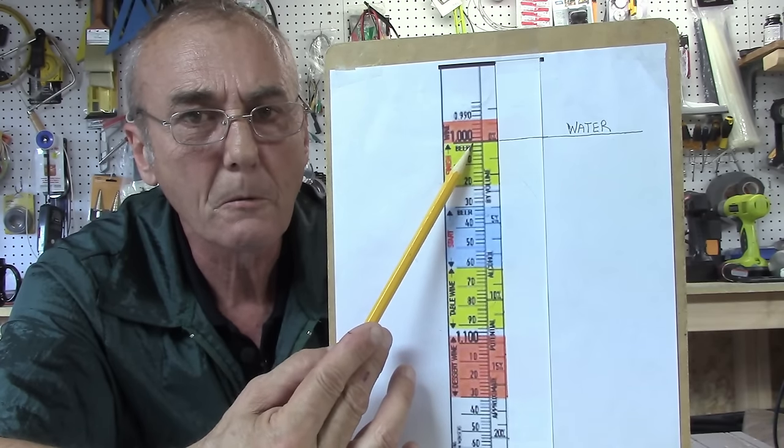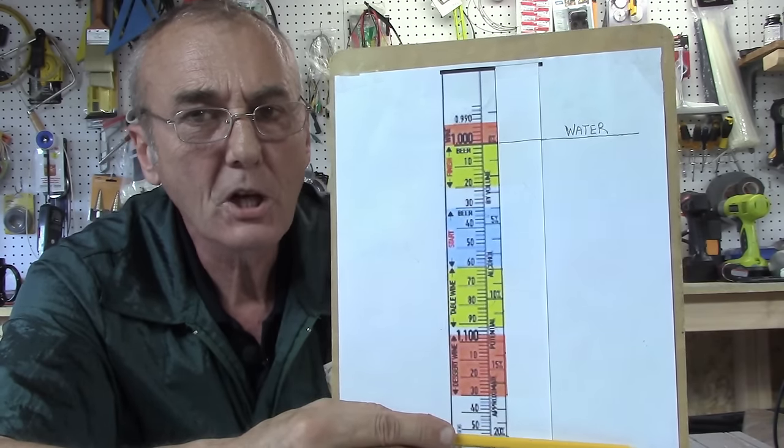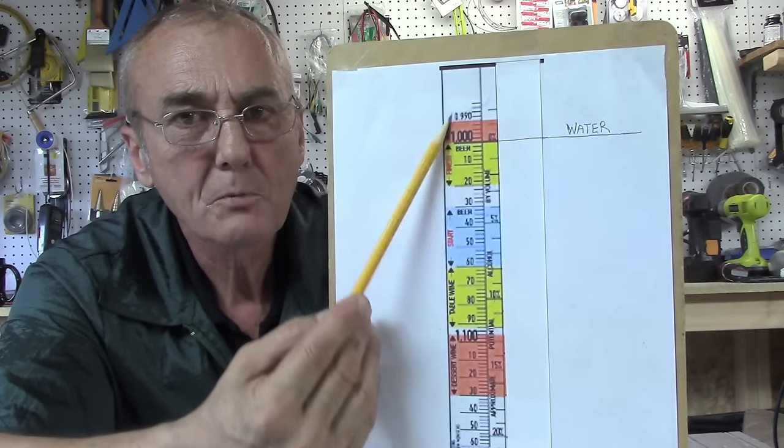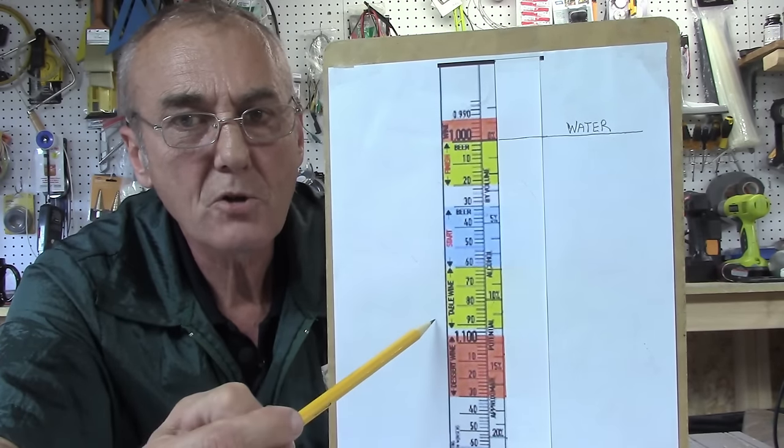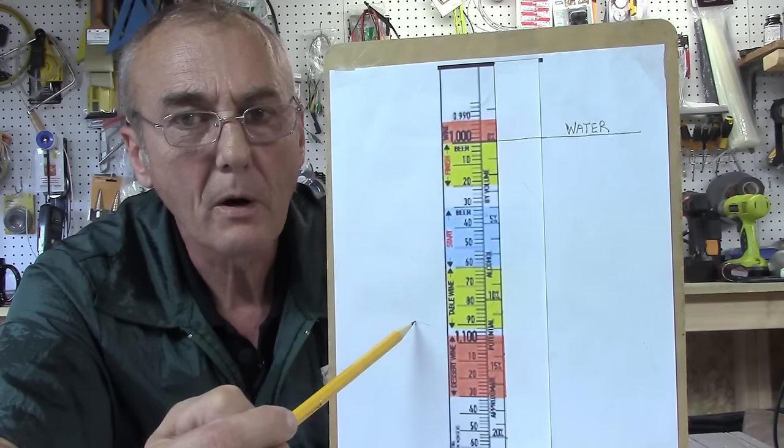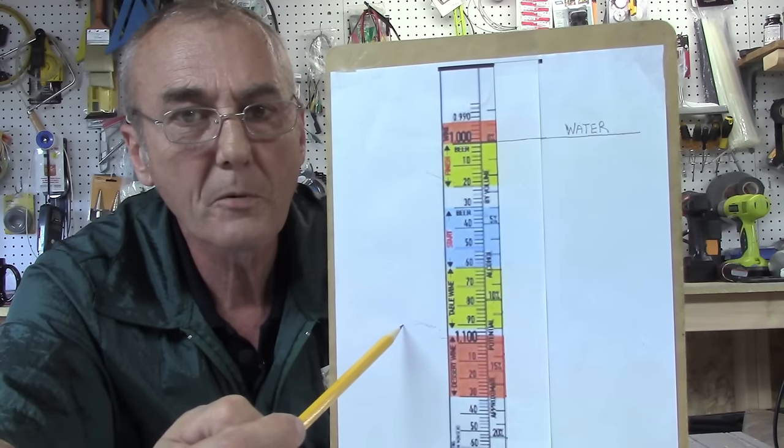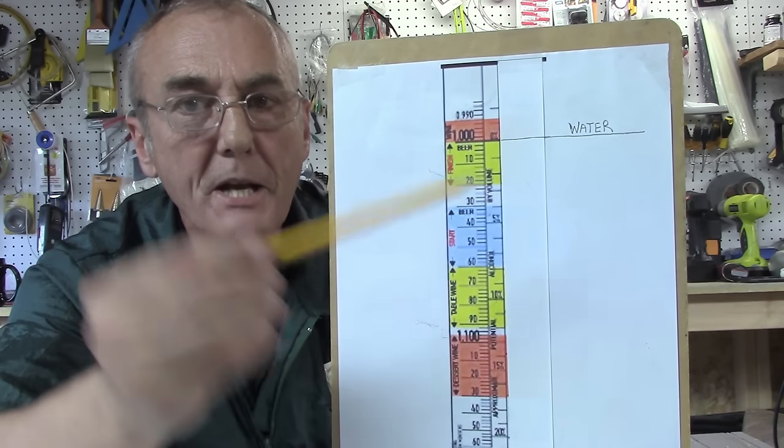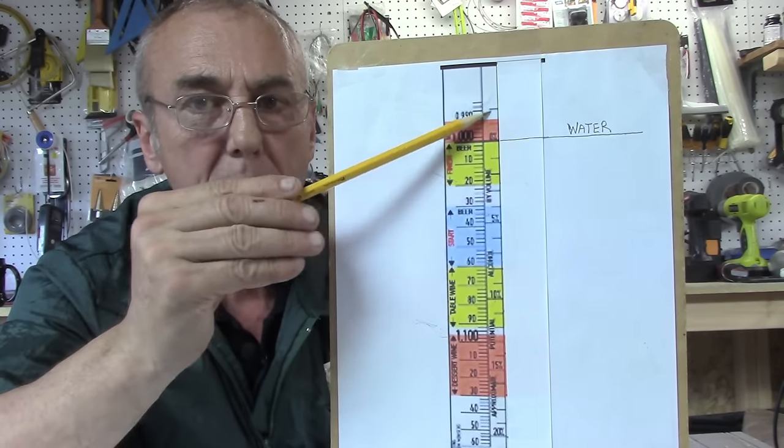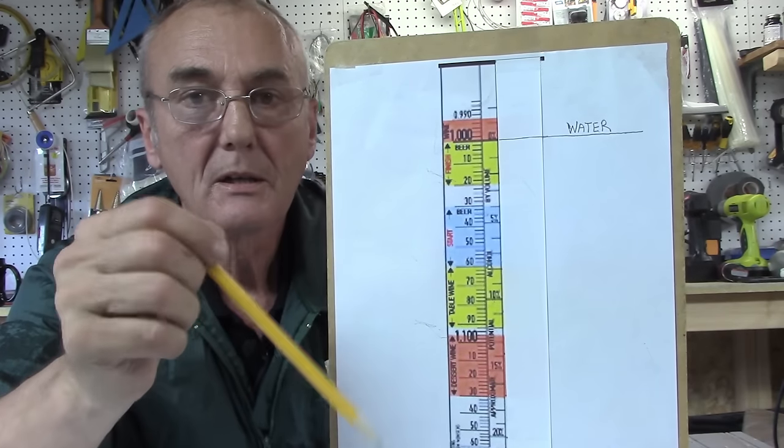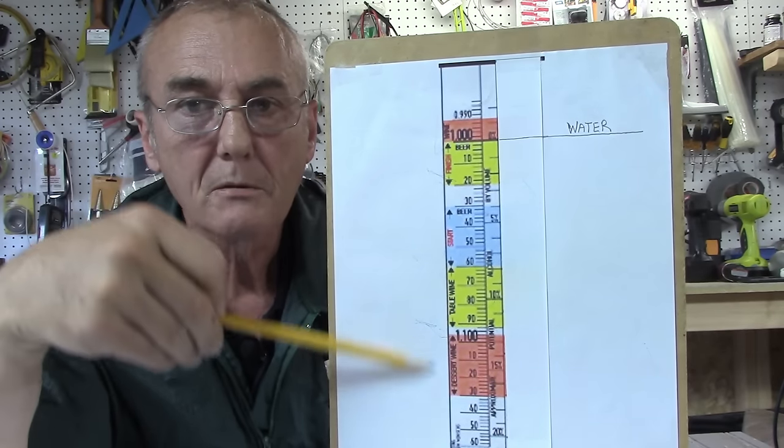So that should clear that up. Remember: first hydrometer reading anywhere, second hydrometer reading - subtract that from the first hydrometer reading and that'll give you your percent if you're using that percent scale.